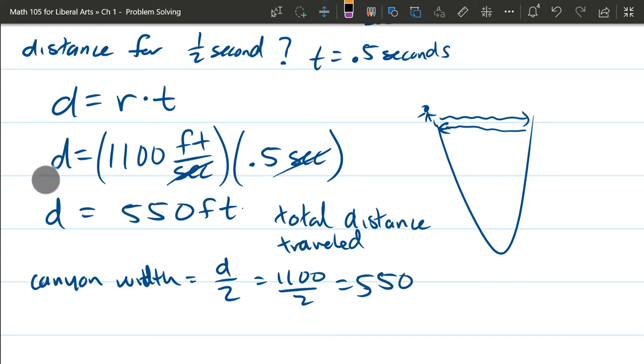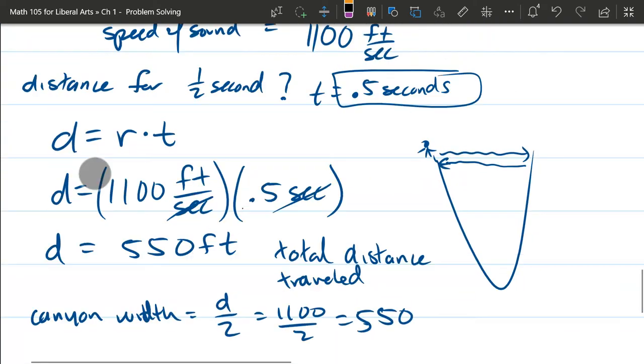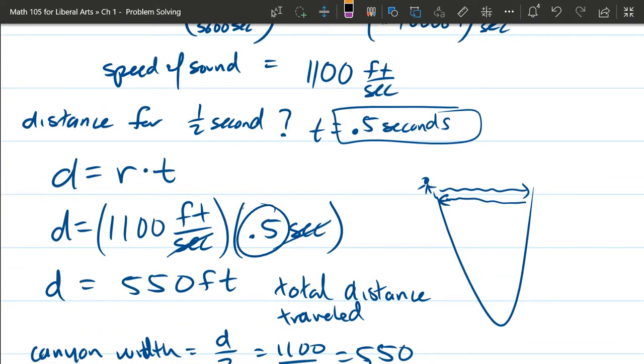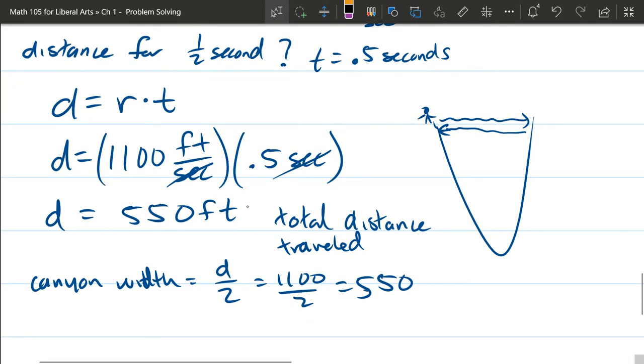Alright, part B on this question is similar. The only difference is you leave T as, well, they say to use N, but whatever letter you use, or is it in terms of N, instead of this number, you just put the letter N right there and then simplify it. So that's the only difference in part B. Just remember, your sound's traveling twice as far as the actual width.